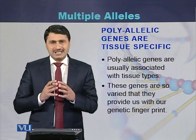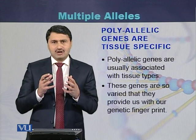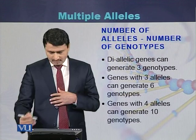Polyallelic genes are usually tissue specific — they are present in certain tissues of the human body. For example, in humans, skin color is a trait that is controlled by multiple alleles of different genes.